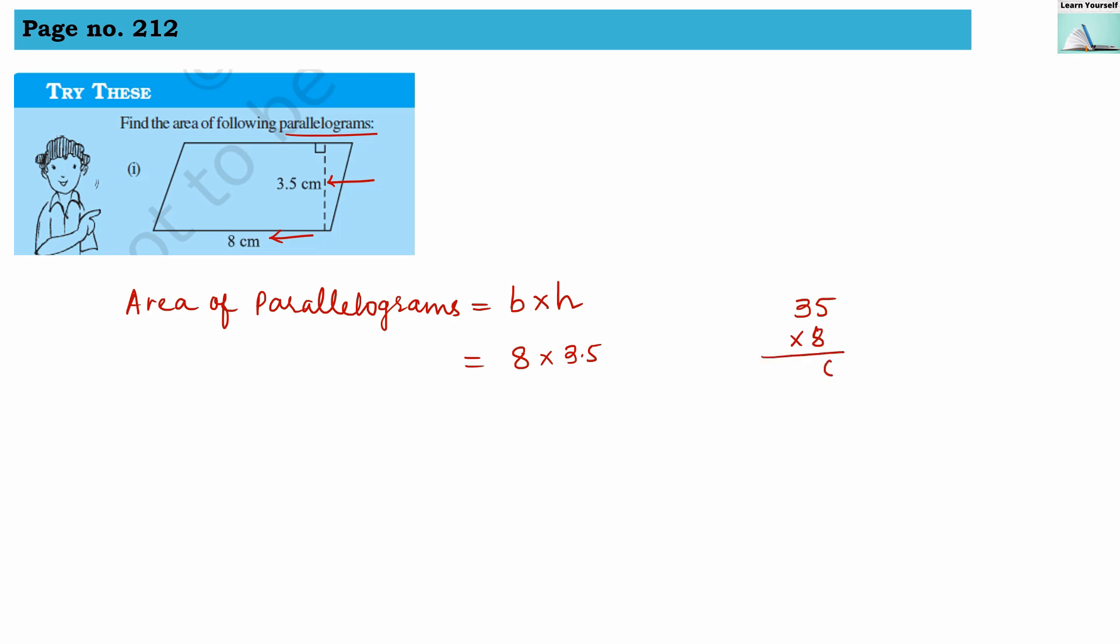8 into 5 is 40, 0, 4. 3 into 8, 24 plus 4 is 28. Now for the decimal point, from the one's position one number we are counting because here after decimal point one number is there. So 28 will be the answer. So 28 centimeter square will be the area for this parallelogram.